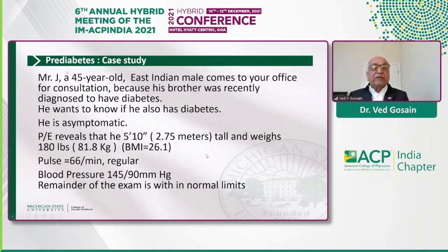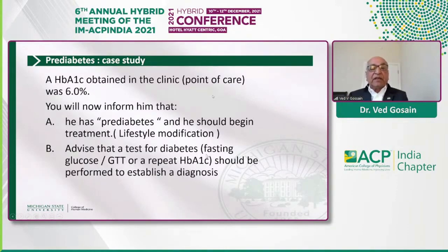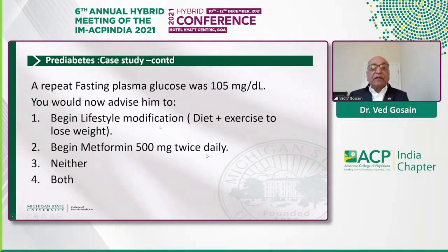Back to our case: this was a 45-year-old essentially asymptomatic gentleman, blood pressure likely elevated. He had a hemoglobin A1C of 6% done at point of care. The correct answer is to advise a second test, because recall this hemoglobin A1C was done at point of care — not a certified laboratory test. A repeat fasting blood glucose was obtained at 105 mg/dL, which now meets the ADA criteria for prediabetes. He should begin lifestyle modification — a combination of diet and exercise, approximately 30 minutes 5 days a week or 150 minutes weekly.